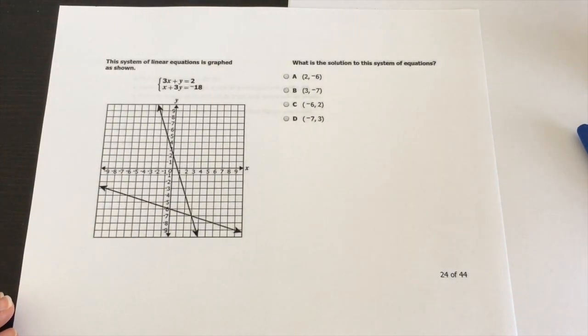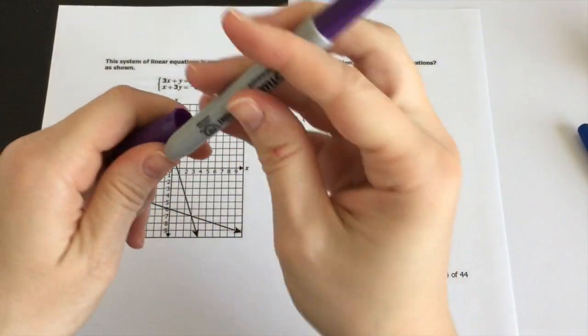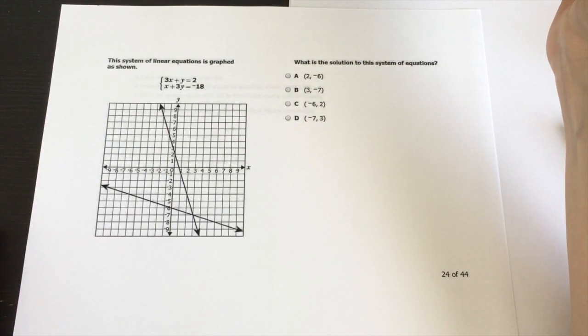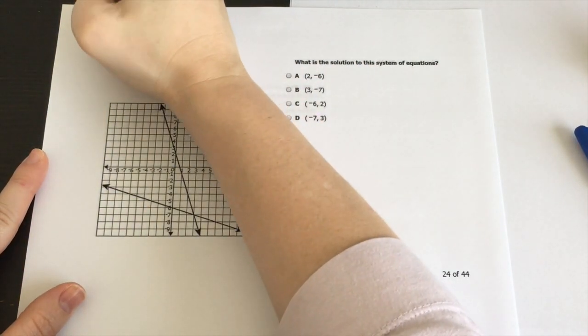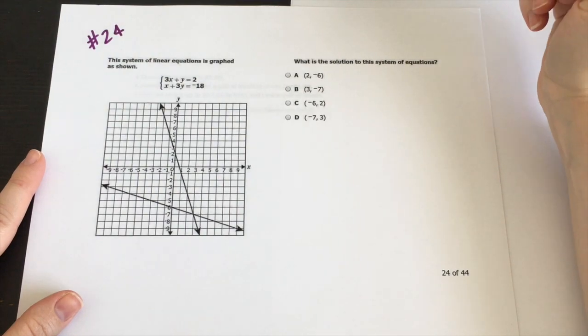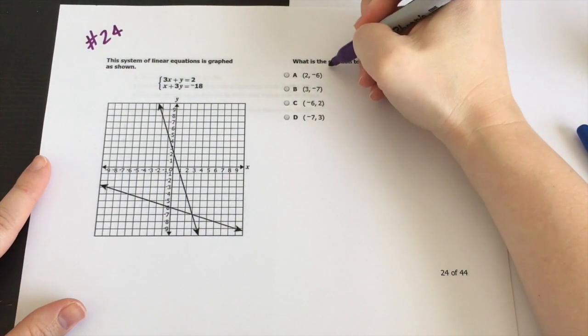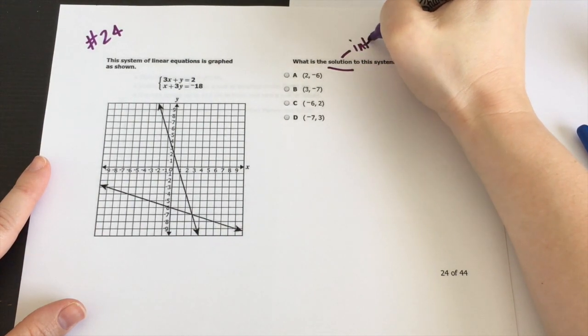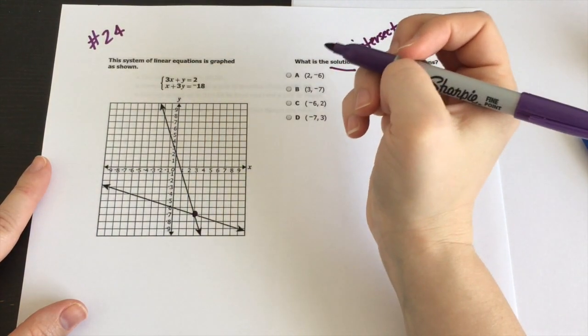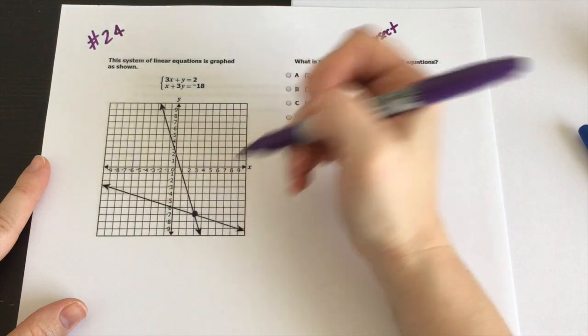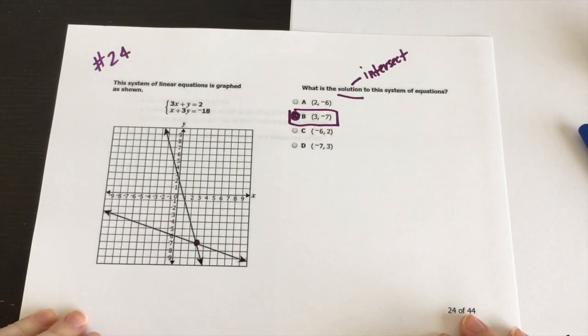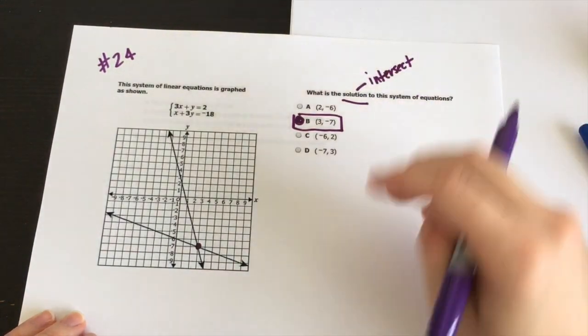We're looking at number 24. So this system of linear equations is graphed as shown. What is the solution to this system of equations? So remember solutions just means where they intersect. So we need to know what this point right here is. There's our point of intersection. So it's going to be 3, 7. There we go. Short and sweet with that one. So 24, intersection. So where it's the solution, that's where they intersect.